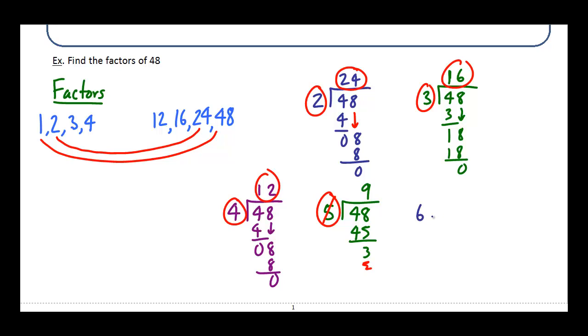All right, I'll keep going try six. So again, six doesn't go to four. But I happen to know that six goes into 48, eight times, give me 48 with no remainder. So six is a factor. And so is eight.